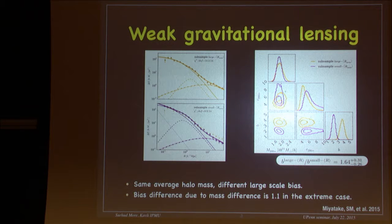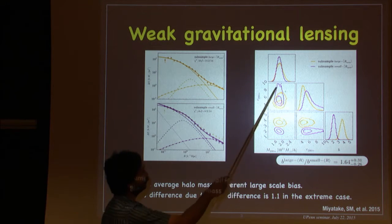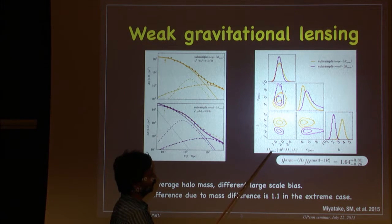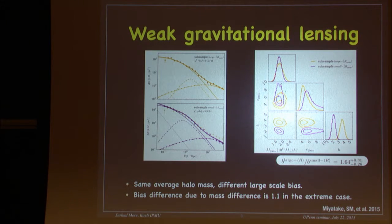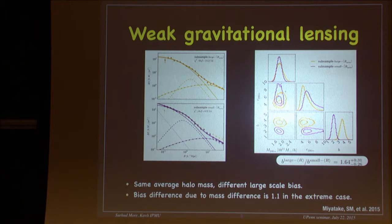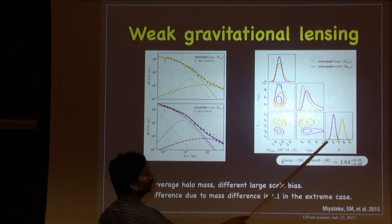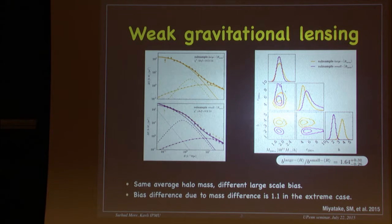We marginalized over off-centering parameters as well. What is striking is the posterior distribution of mass for the two subsamples — they are almost the same. In terms of concentration there is a slight difference, but not much given the error bars. However, the biases are very different: the ratio between the two biases is about 1.6 ± 0.3, just from weak lensing.